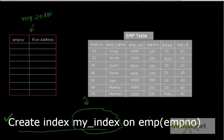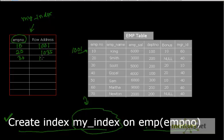When you execute CREATE INDEX my_index on the employee number column, Oracle creates an additional storage area called my_index. In this storage area, it stores the column value and the row address. For example, employee number 10 gets row address 1001, employee number 20 gets row address 1035, employee number 30 gets row address 1046, and so on.